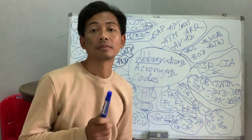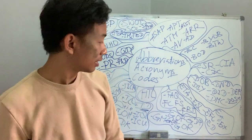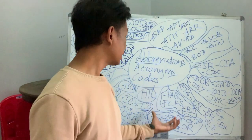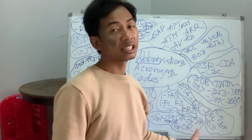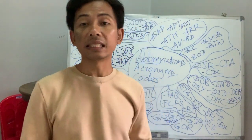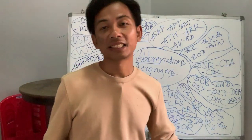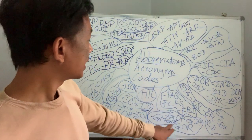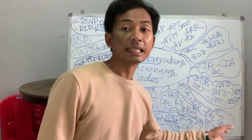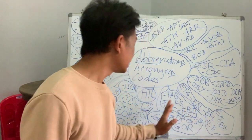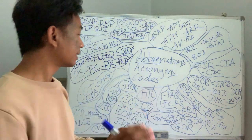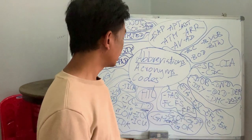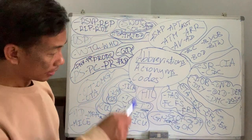GM — general manager. So GM and ED — sometimes an organization has both. It's up to the organization who is bigger, but if one organization has no GM they may have ED, or vice versa. Sometimes they also have MD — managing director. All of these are big positions.